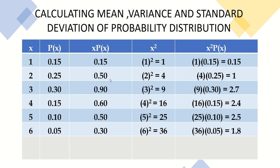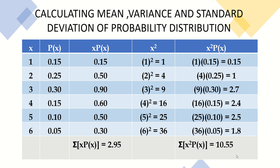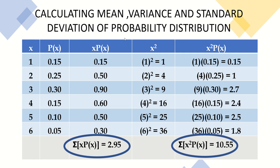After completing the table, we find the summation of x·P(x) by adding all values in that column: 0.15 + 0.50 + 0.90 + 0.60 + 0.50 + 0.30 = 2.95. We also find the summation of x²·P(x) by adding 0.15 + 1 + 2.7 + 2.4 + 2.5 + 1.8 = 10.55. We need these two values to calculate the mean, variance, and standard deviation.